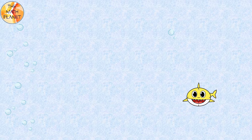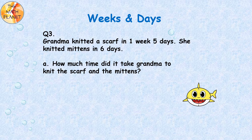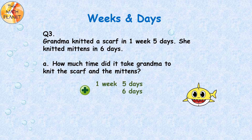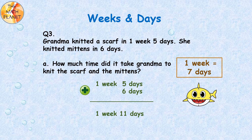Our third word problem involves weeks and days. Grandma knitted a scarf in 1 week 5 days. She knitted mittens in 6 days. How much time did it take grandma to knit the scarf and the mittens? The addition equation is 1 week 5 days plus 6 days. The sum will be 1 week 11 days. But 1 week equals 7 days, and since 11 days is greater than 1 week, we regroup 7 days into 1 week. So the sum will be 2 weeks 4 days.